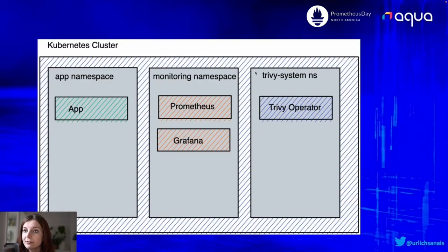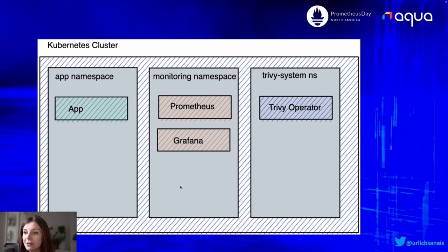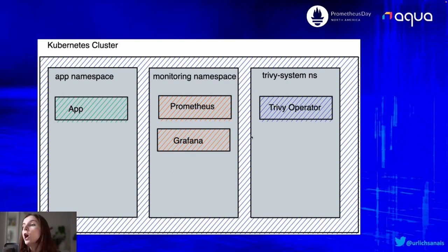Here's an overview of the cluster: we have our application namespace that could be anything, then we have our monitoring namespace with Prometheus and Grafana running. I'm a huge fan of the kube-prometheus stack that just installs everything at once, which is great. You can obviously also use additional tools — I'm going to highlight Loki at the end as well — but our main focus in this talk is on Prometheus and Grafana and integrating our security scans within that.